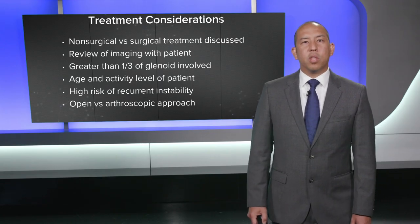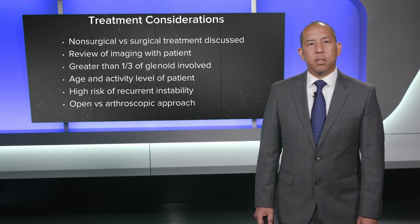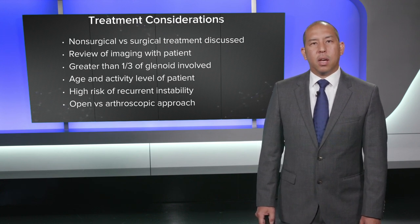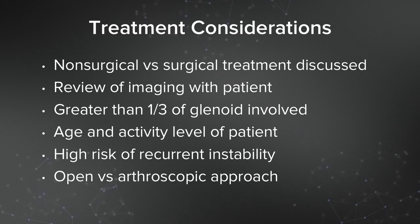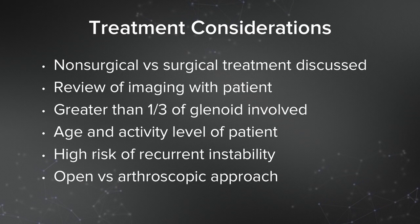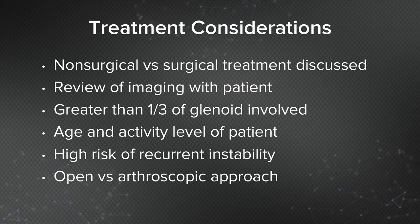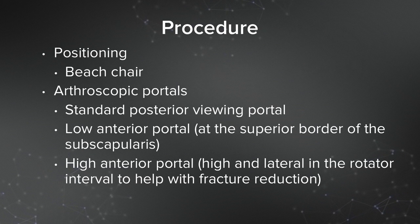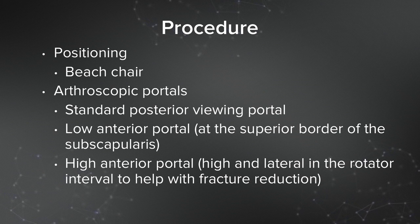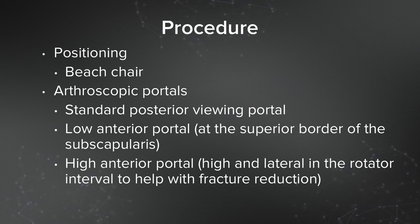I discussed treatment options with the patient — non-surgical versus surgical treatment was discussed. We reviewed the imaging. I counseled him that greater than one-third of the glenoid was involved. Given his age, activity level, and high risk of recurrent instability, he opted for surgical treatment. We discussed open versus arthroscopic approach. I consented him for an arthroscopic procedure with a possible open. Positioning is beach chair. A standard arthroscopic posterior portal is made, a low anterior portal at the superior border of the subscapularis, and a high anterior portal laterally in the rotator interval to help with fracture reduction.